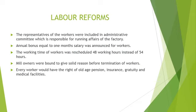The Bhutto government announced a new labor policy on 10th January 1972. Representatives of laborers were included in the administrative committee responsible for running factory affairs. An annual bonus equal to one month's salary was announced for workers. Working hours were rescheduled from 54 to 48 hours per week. Mill owners were bound to give solid reasons for termination; unfair termination would be avoided. Every laborer would have the right to old age pension, insurance, and medical facilities.